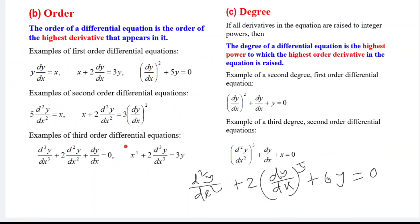Now we discuss how to determine the order of a differential equation. Order means the number of derivatives — specifically the highest number of derivatives. If the number of derivatives is one, it is first-order. Note: if a term appears as a power rather than a derivative count, it does not change the order. For example, (dy/dx)² is still first-order because the exponent is a power, not a derivative count.